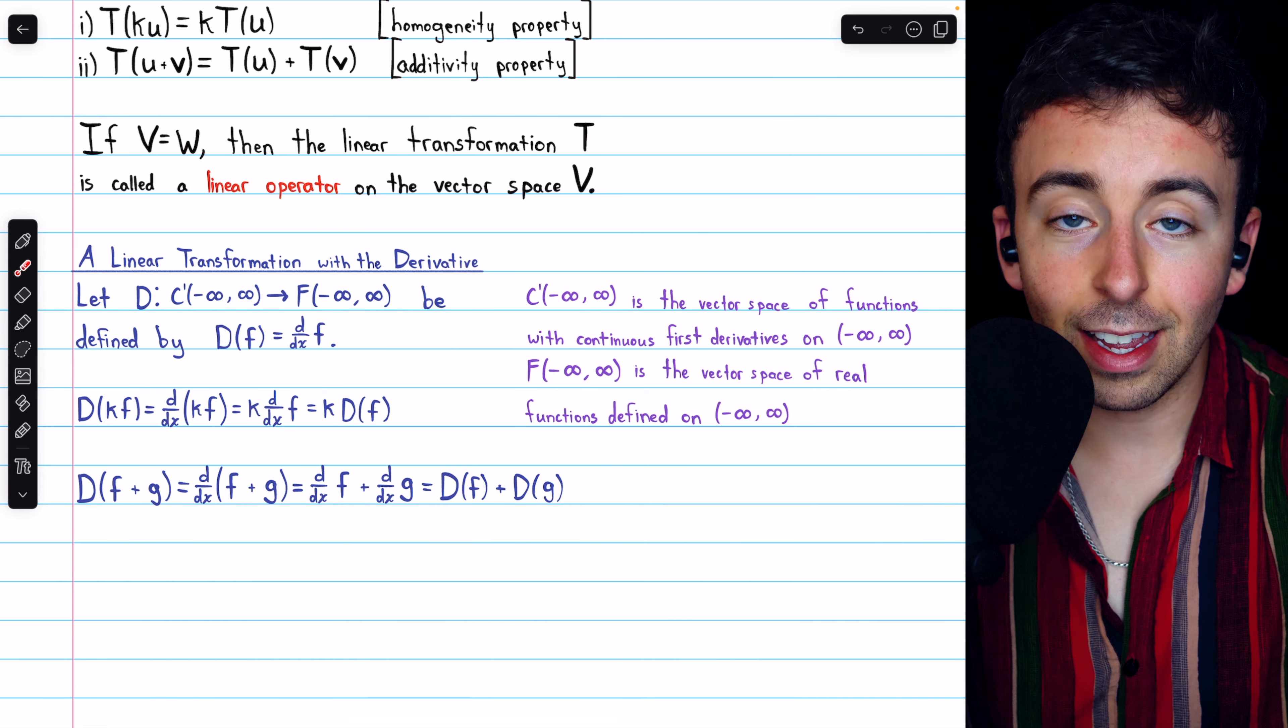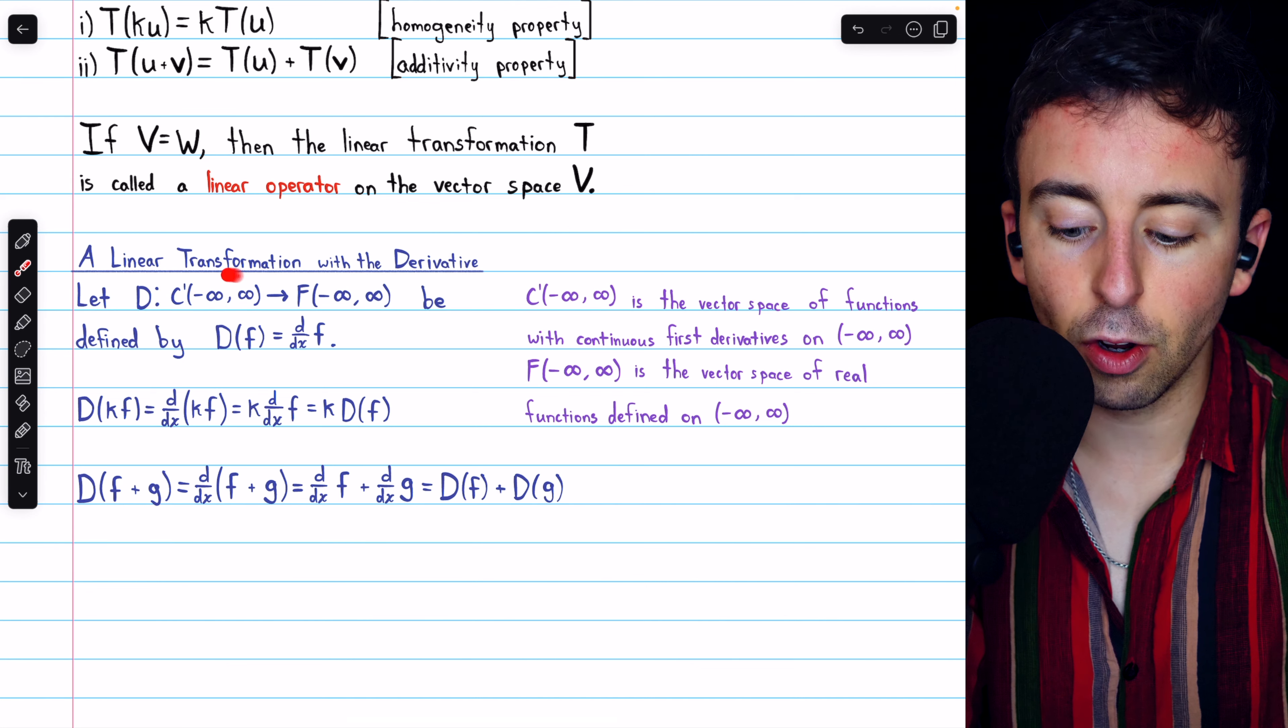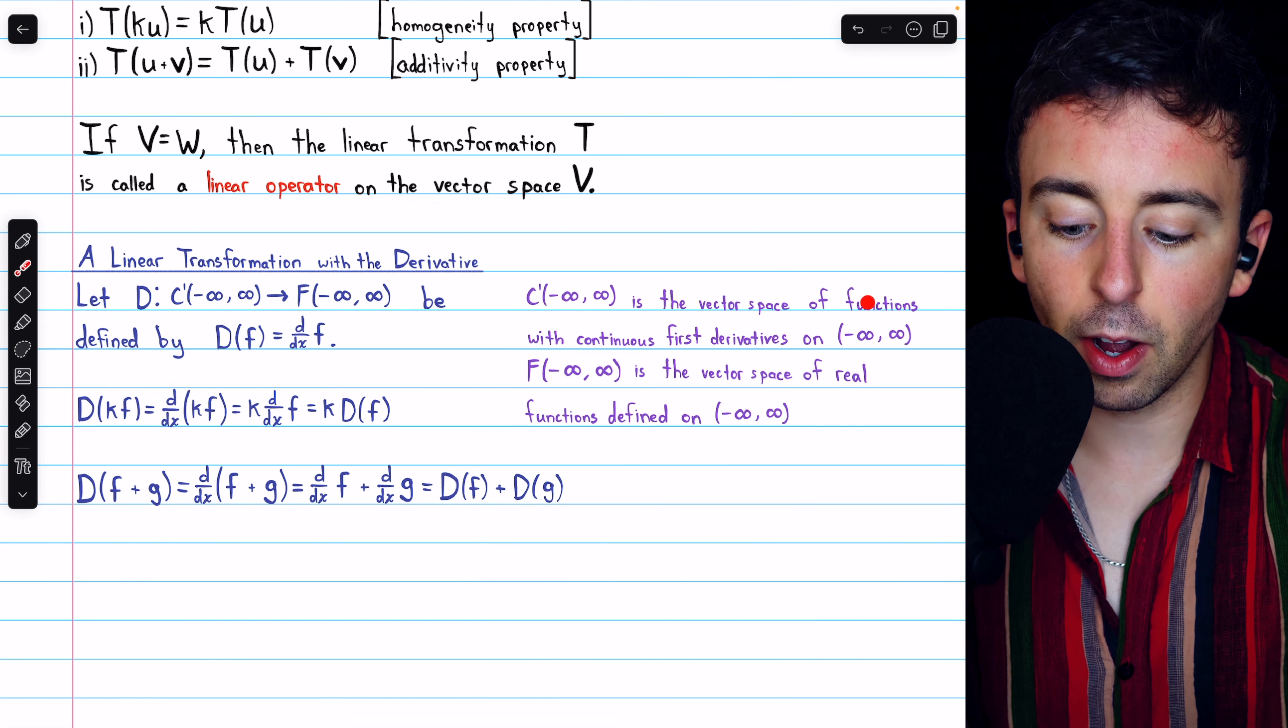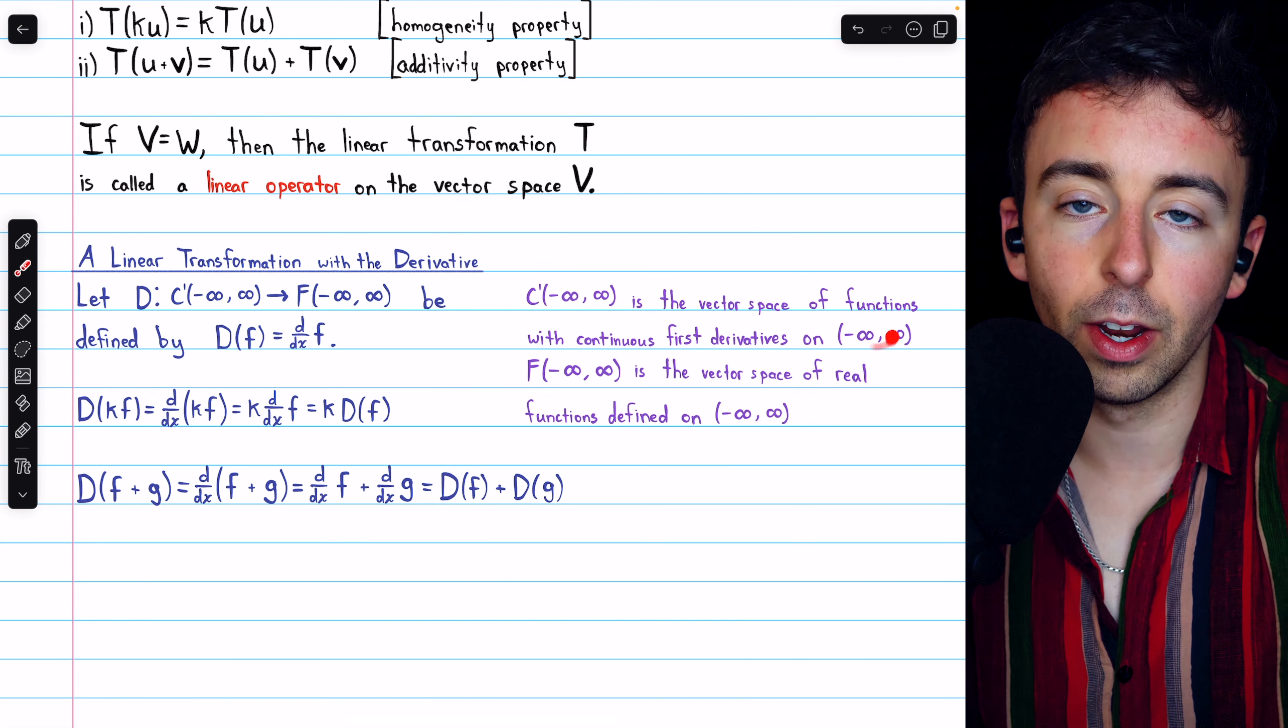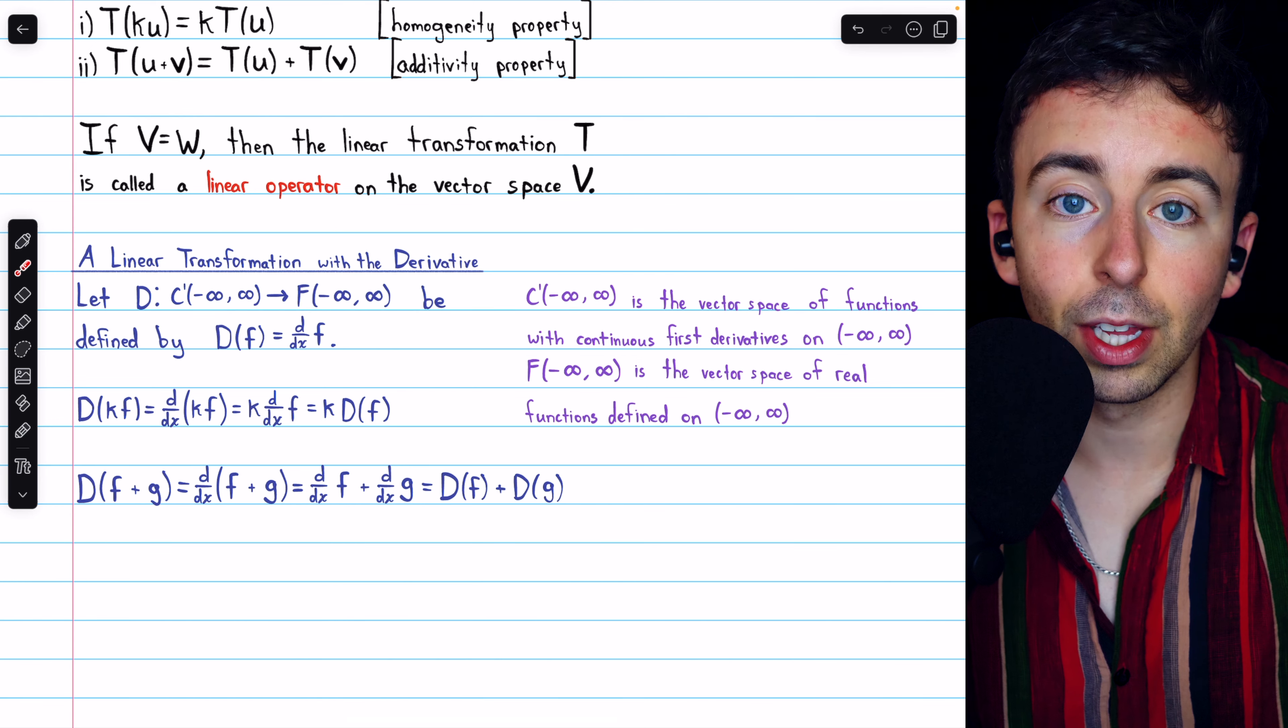Once more, just to make the notation clear, this vector space, the domain, is the vector space of functions with continuous first derivatives on the real numbers, and this vector space, the codomain, is the vector space of real valued functions on the real numbers.